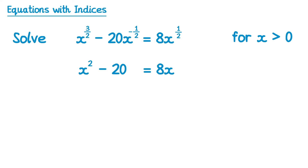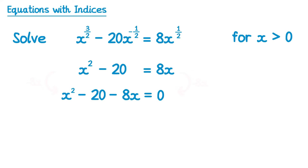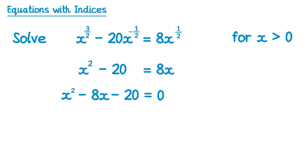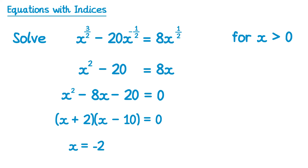Now if we subtract 8x from both sides, we get x squared minus 20 minus 8x equals 0. Rearranging, it turns into a quadratic equation. You can solve this one by factorising: it's (x + 2)(x - 10) equals 0, which gives us two solutions: x equals negative 2 and also x equals 10.